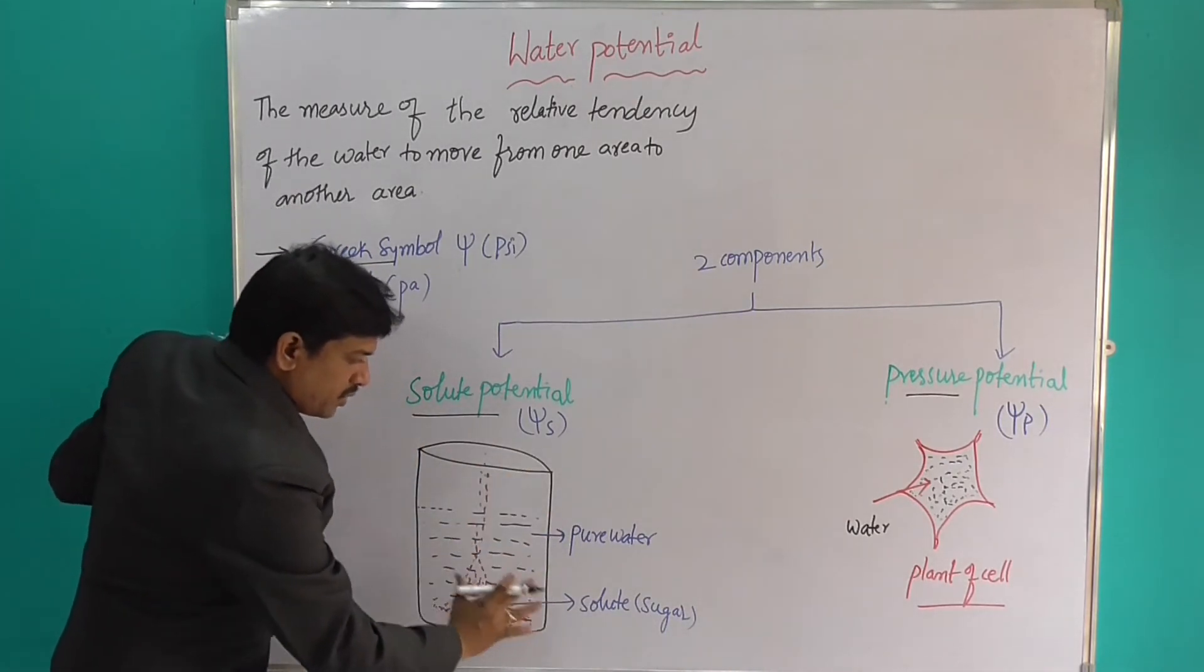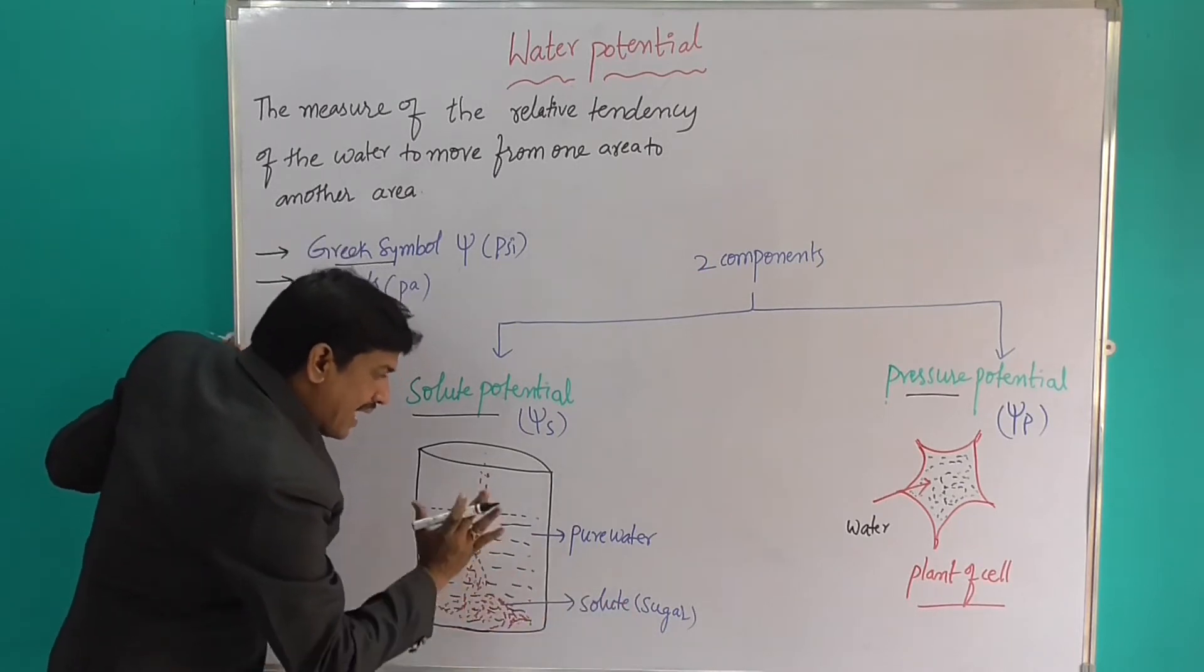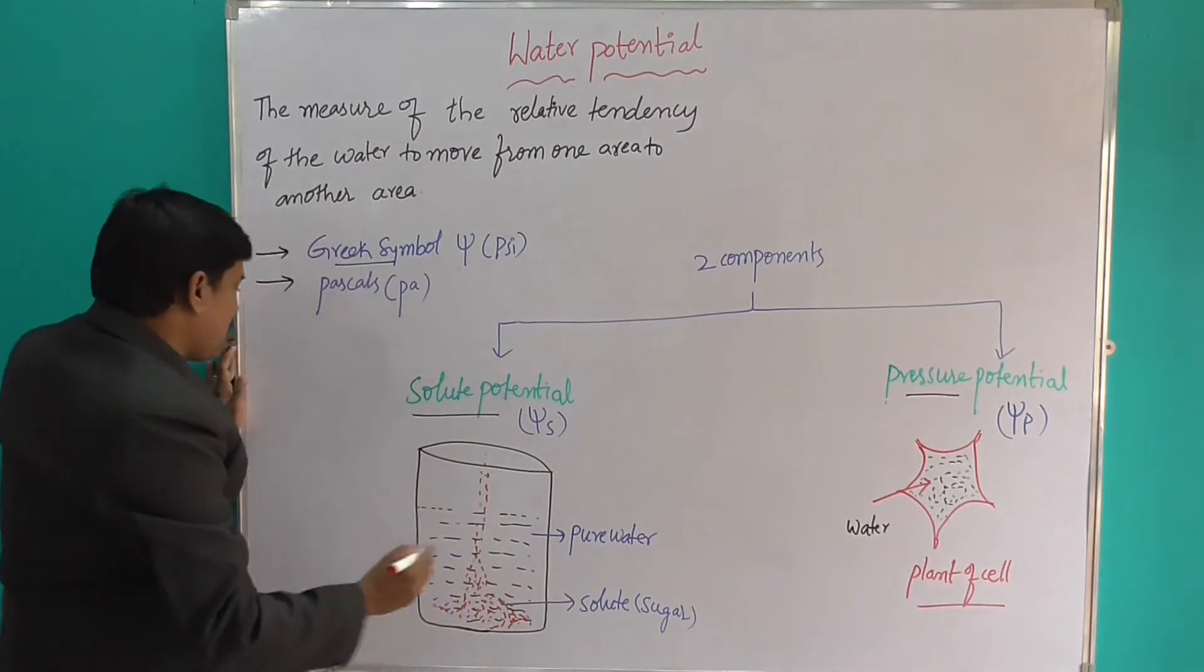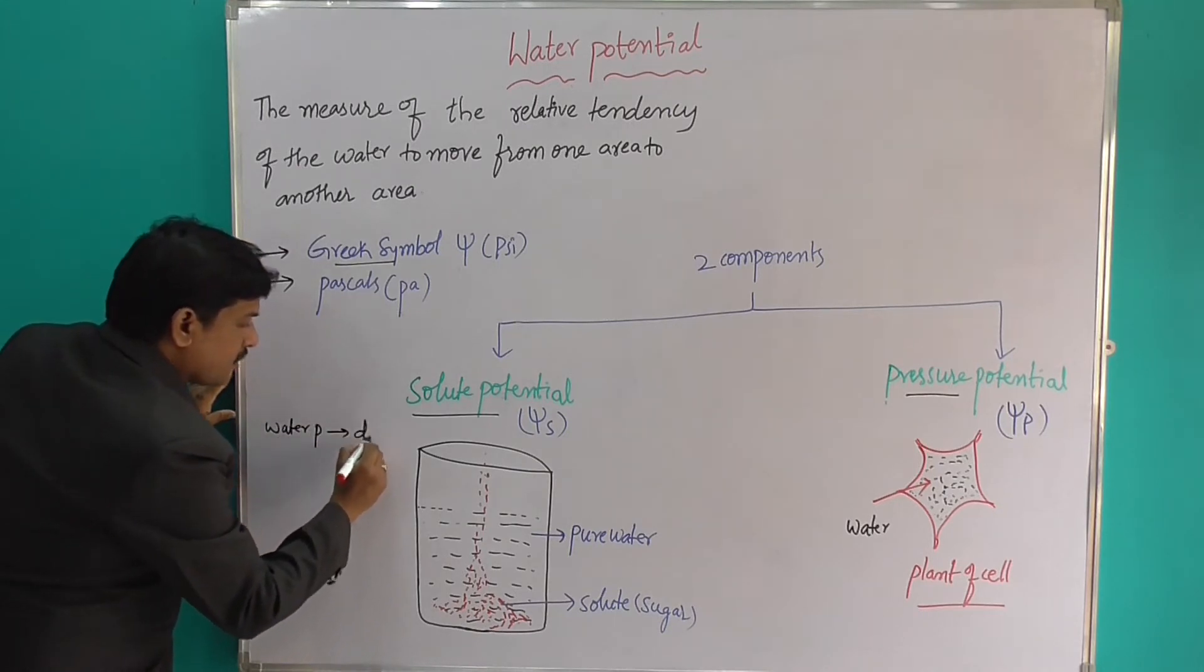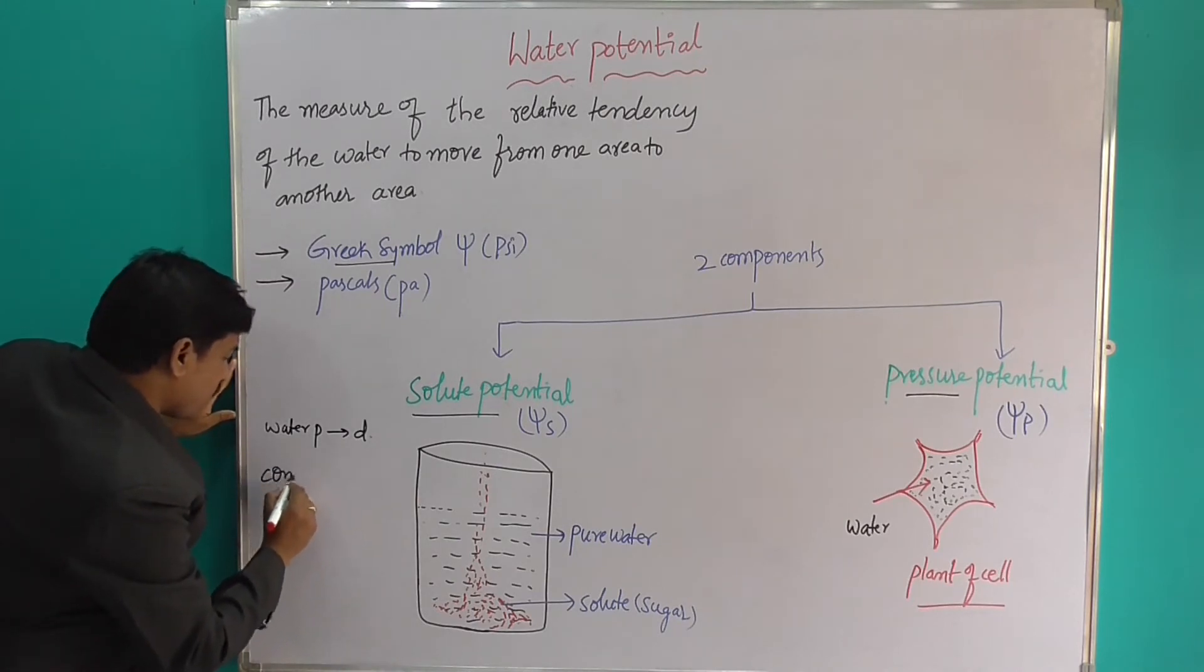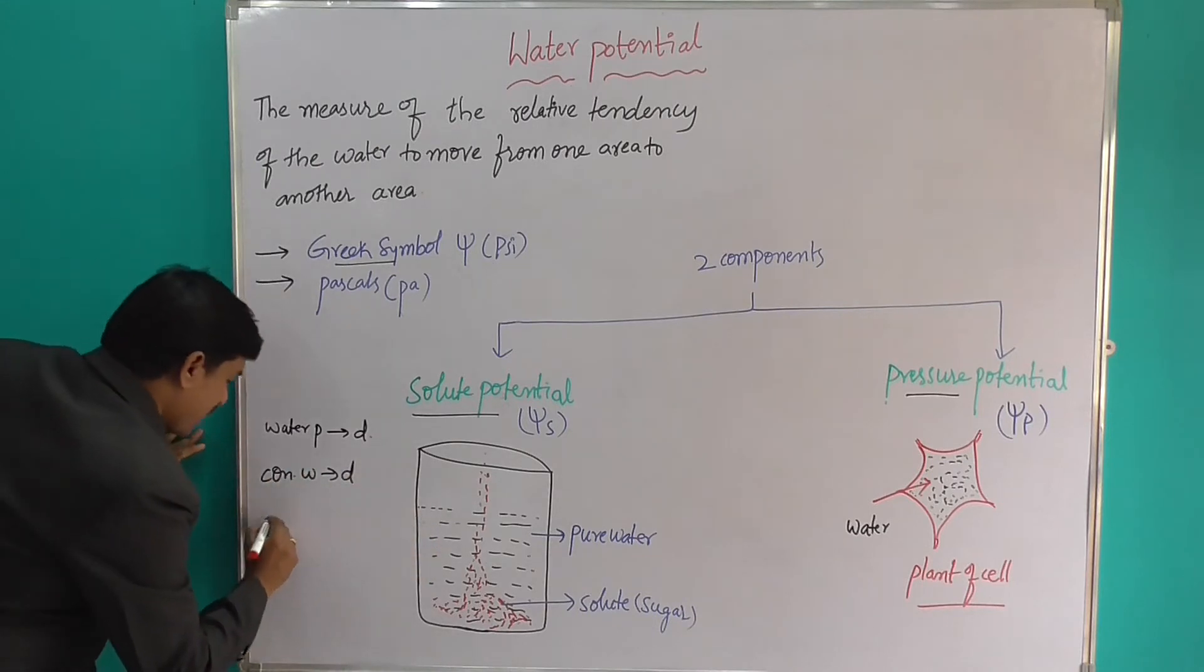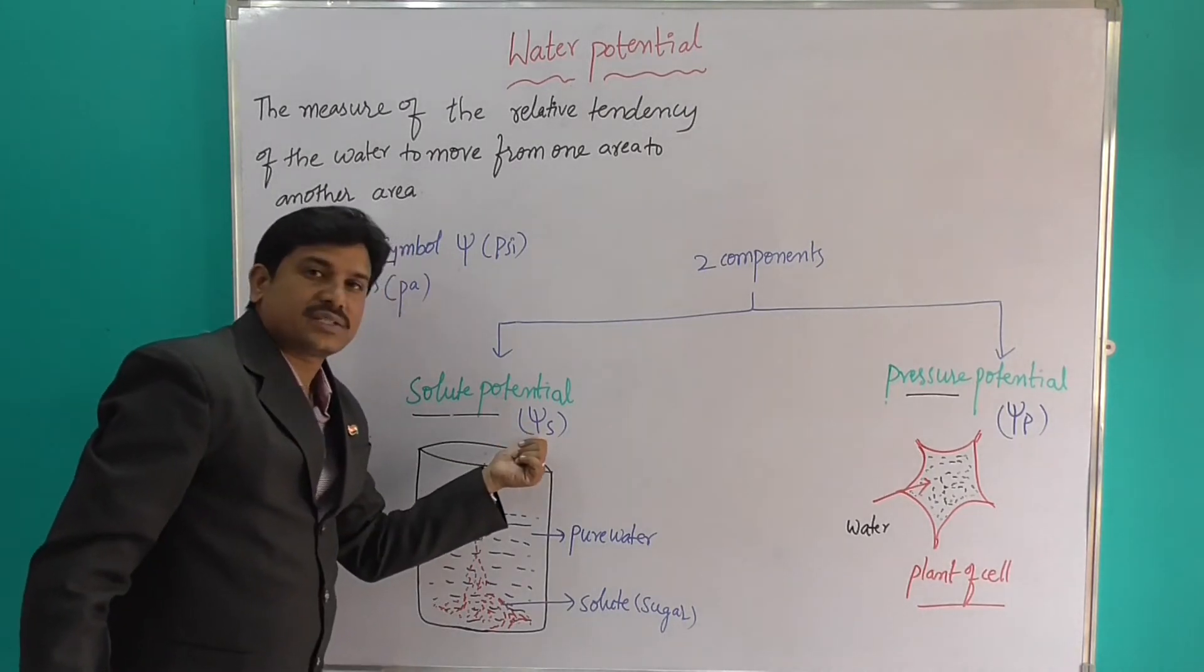Solute potential: when the solute is added with pure water, like sugar, the free water molecules are decreasing. At that time, the water potential is decreased. As water potential decreases, the concentration of water also decreases, so it is always negative. This is psi s (ψs).